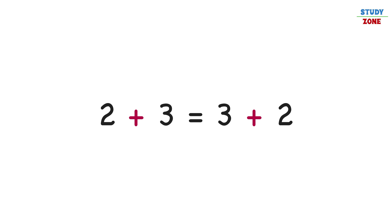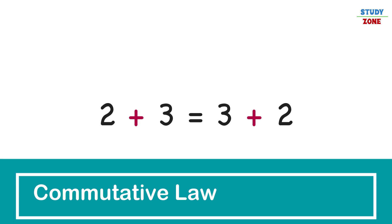Adding 2 and 3 or 3 and 2, the result will be 5 in both cases. Do you know what law is this? It's called commutative law.